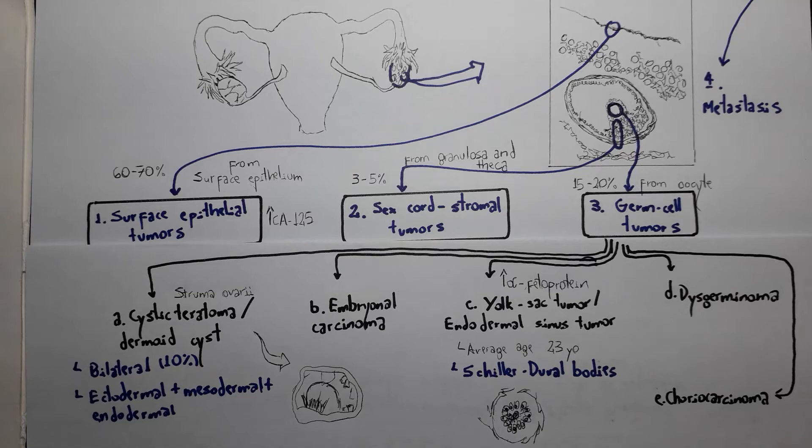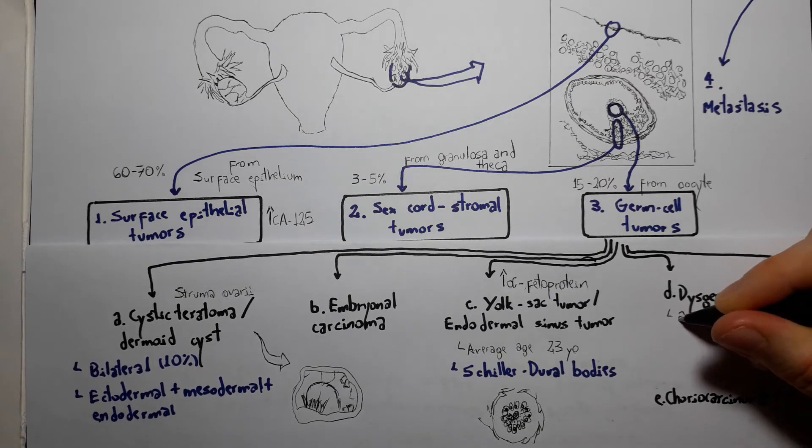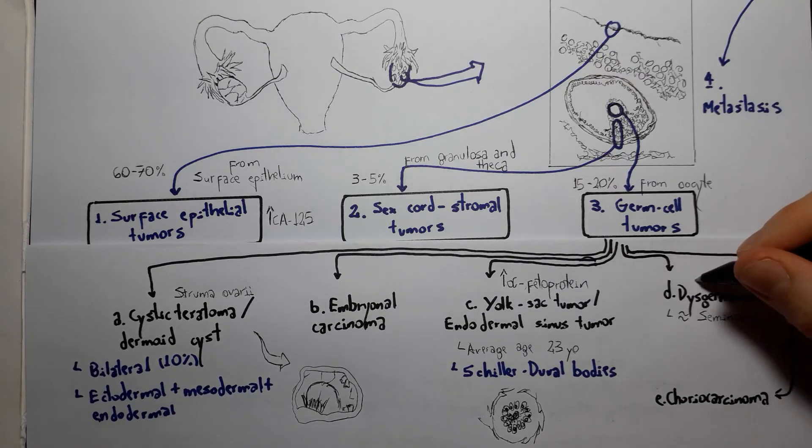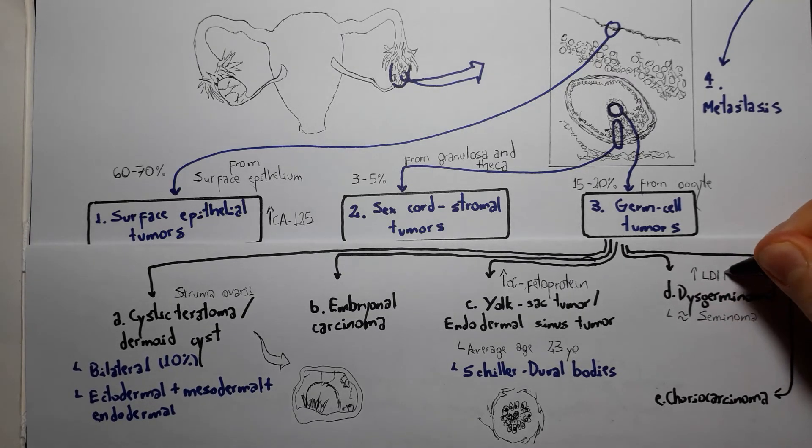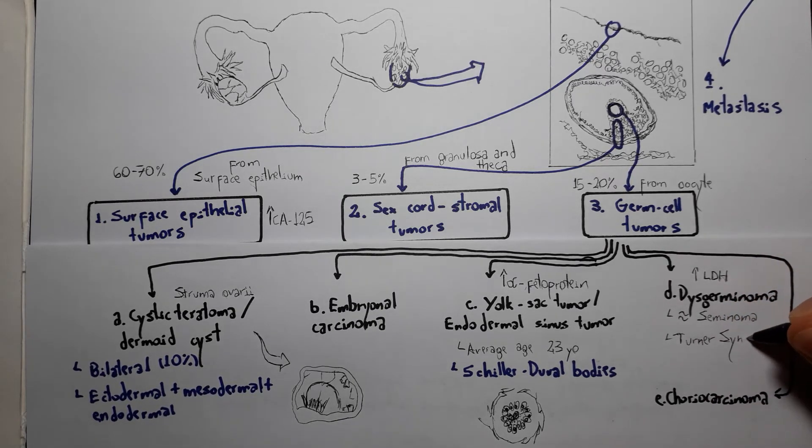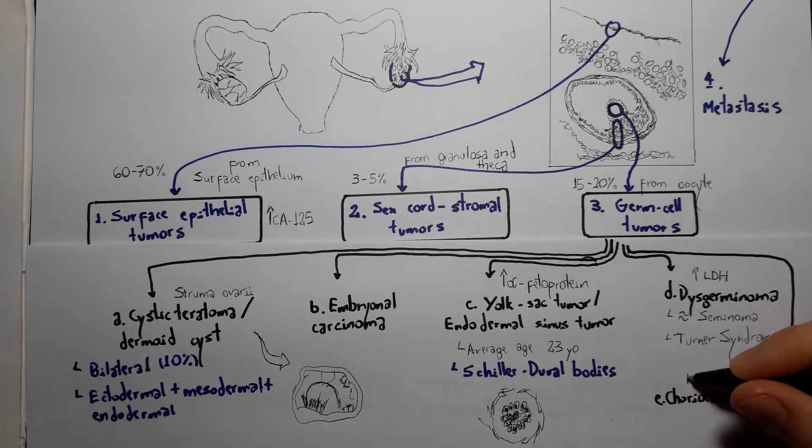Dysgerminoma is the female analogue to seminoma, which you could figure out by the name since they both end with the same six letters. It's commonly associated with the streak ovaries of Turner syndrome, presenting with elevated lactate dehydrogenase.